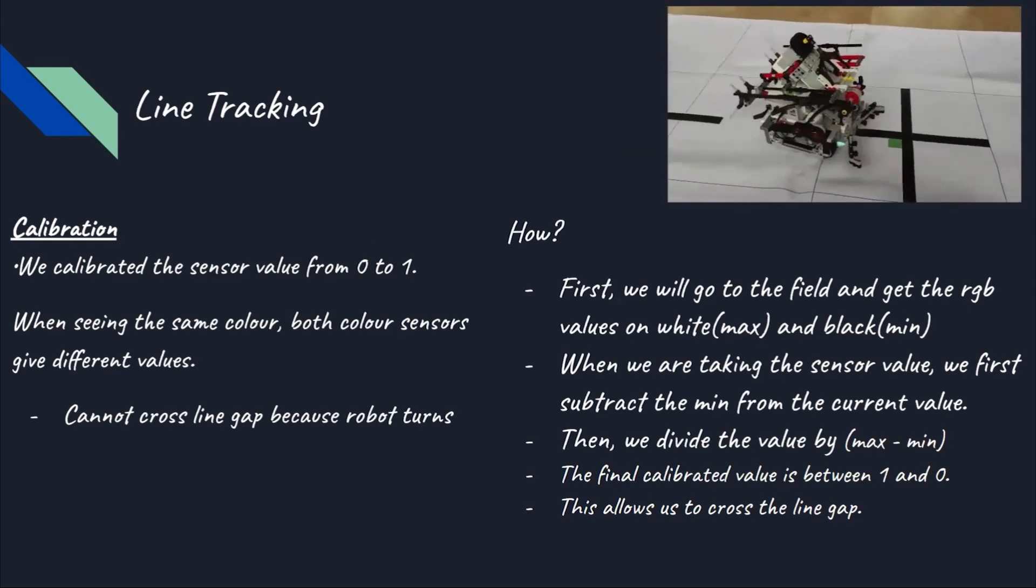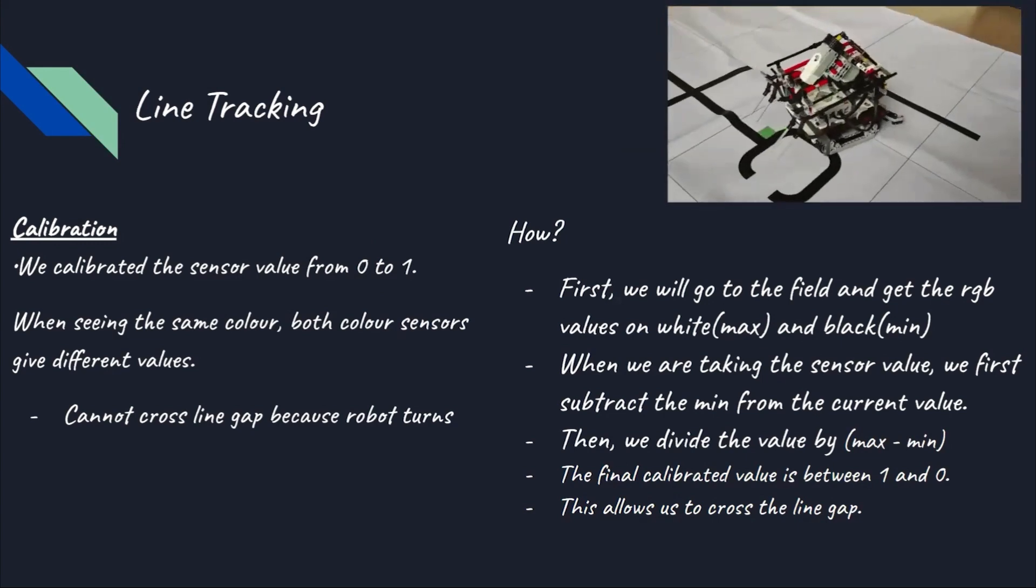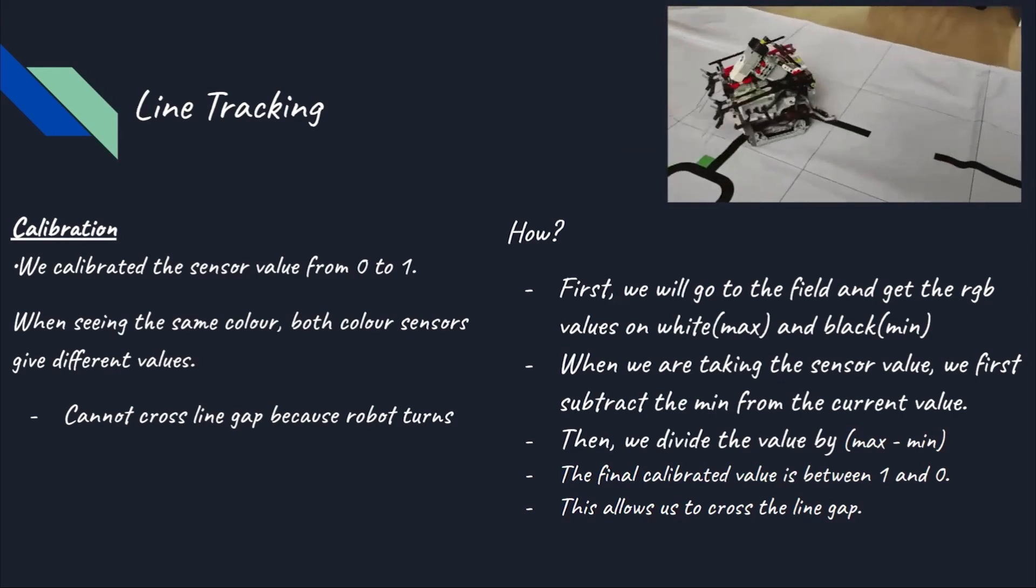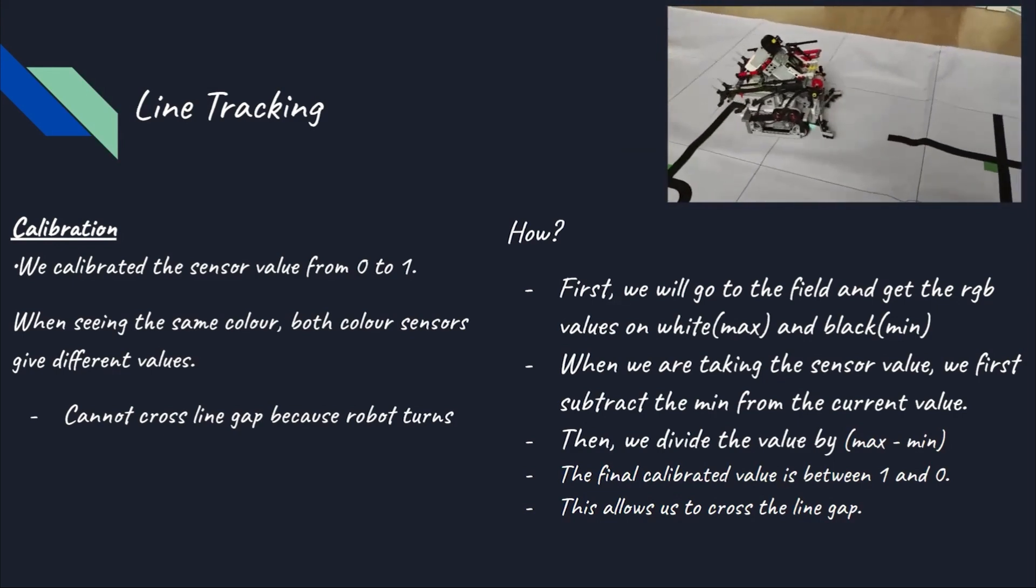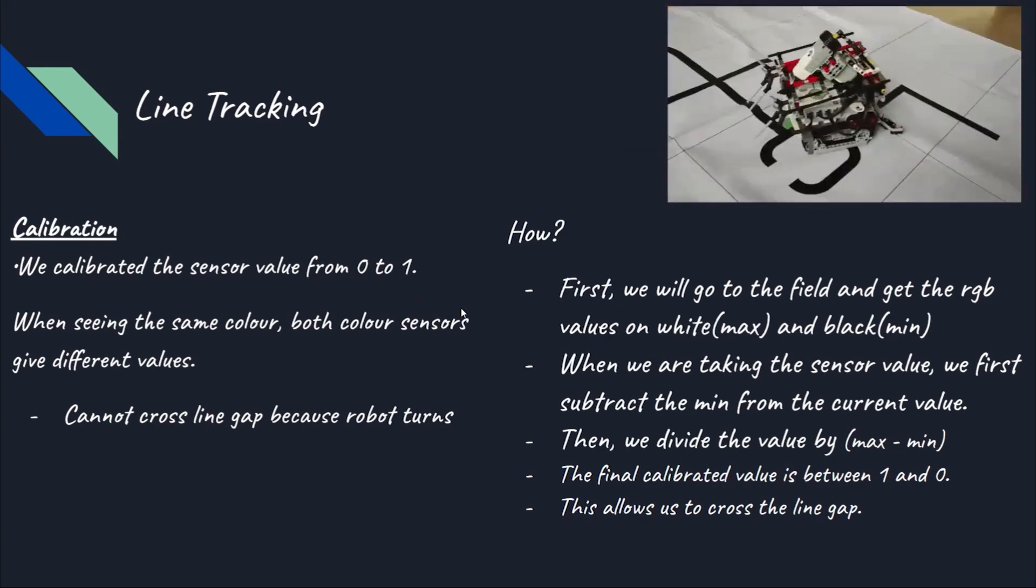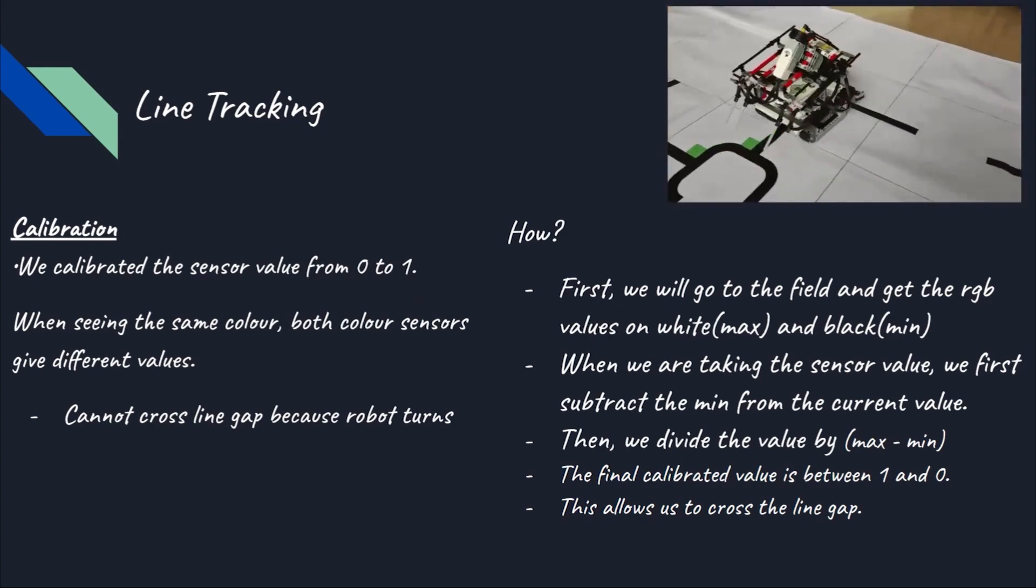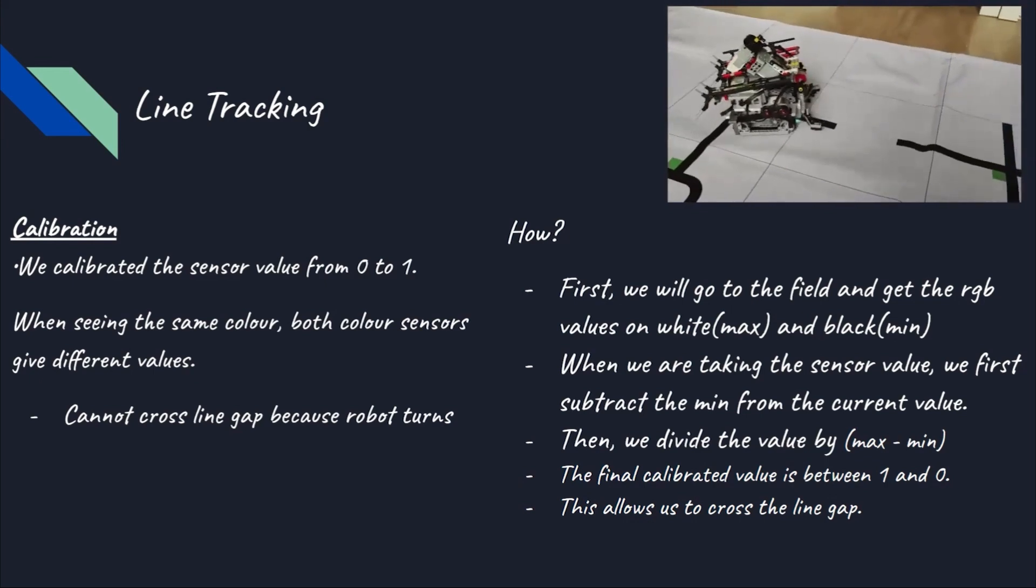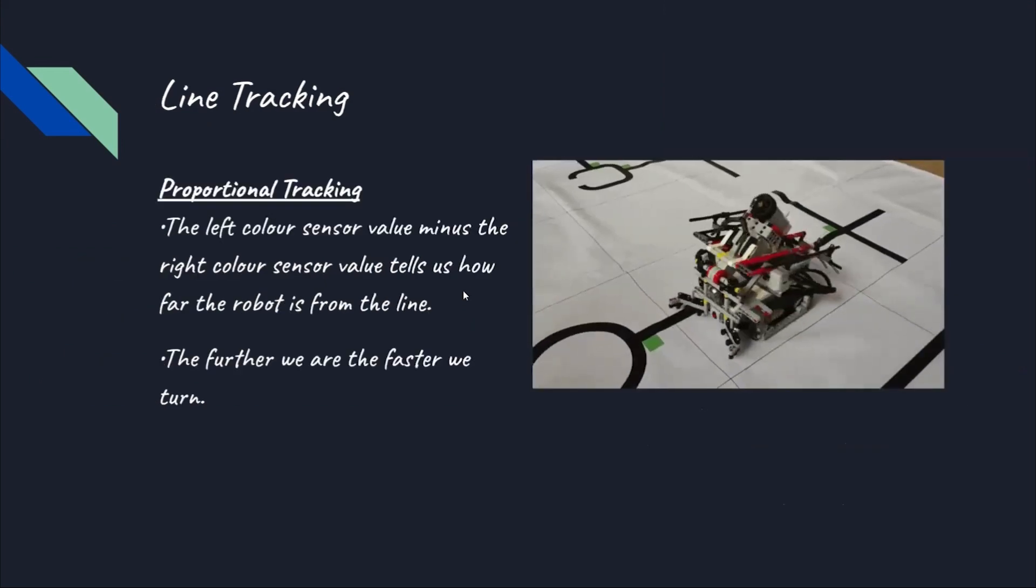When taking the sensor value, we subtract the minimum value from the current value the robot was seeing. After that, we took the current values and divided it by the maximum value minus the minimum value. The final calibrated value is between 0 and 1. This allowed the robot to track the line.